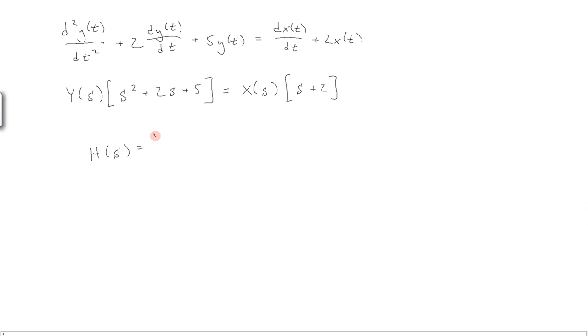For this example, consider the following system. Using the Laplace transform, we can rewrite it in the following way, which gives us the transfer function, which is, once again, y of s divided by x of s, which is equal to this. And then rewriting it in forms of poles and zeros, we get this.